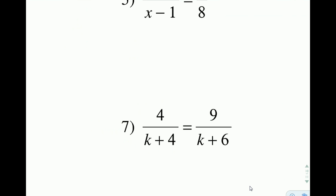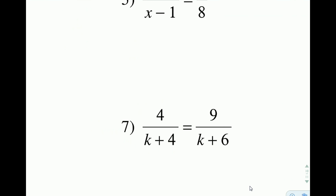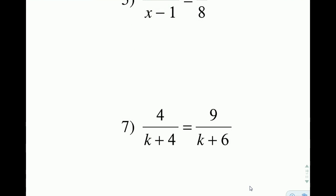We need a common denominator before we can abandon the denominator, before we can multiply through to get rid of it. Since k plus 4 and k plus 6 are completely different groups, nothing factors out of them that's in common. I'm going to wrap them up. And we're going to multiply both fractions by the other person's denominator, by the other side's denominator.